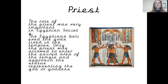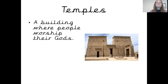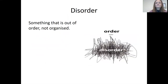A priest — the role of the priest was very important in Egyptian society. The Egyptians believed that the gods lived in temples. Only the priest was allowed to enter the sacred area of the temple and approach the statue that represented the gods or goddesses. You still have priests in religious buildings to this day. A shrine is a place that is regarded as special and holy because it has to do with something sacred or special. A temple is a building — a place where people go to worship their gods. Disorder — something that is out of order or not organised is in disorder. You may hear the words chaos and disorder together — it means it's not organised, it's a bit chaotic, it's out of order.